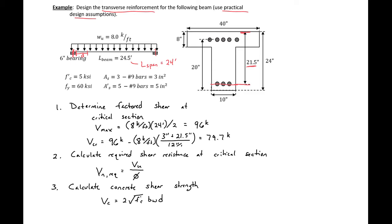Our next step is to calculate the required shear resistance at that critical section. To calculate our V_n required, we take our V_u at the critical section of 79.7 kips divided by 0.75, which is our phi factor for shear. We find our V_n required to be 106.2 kips — this is our required shear strength.